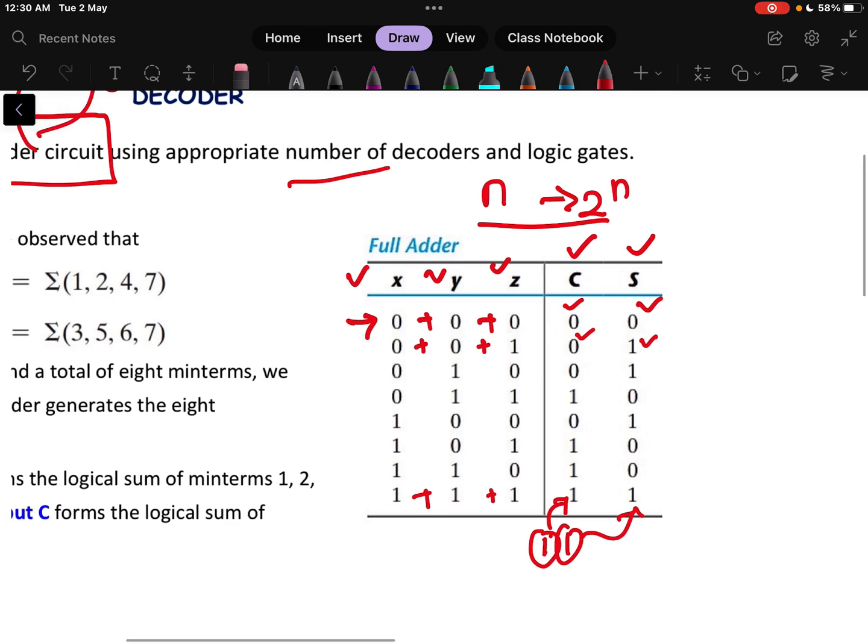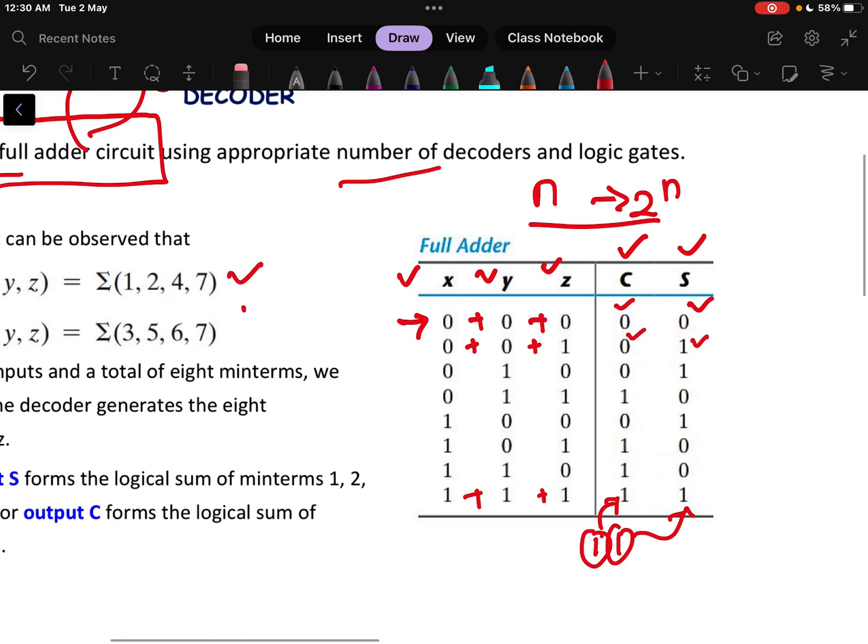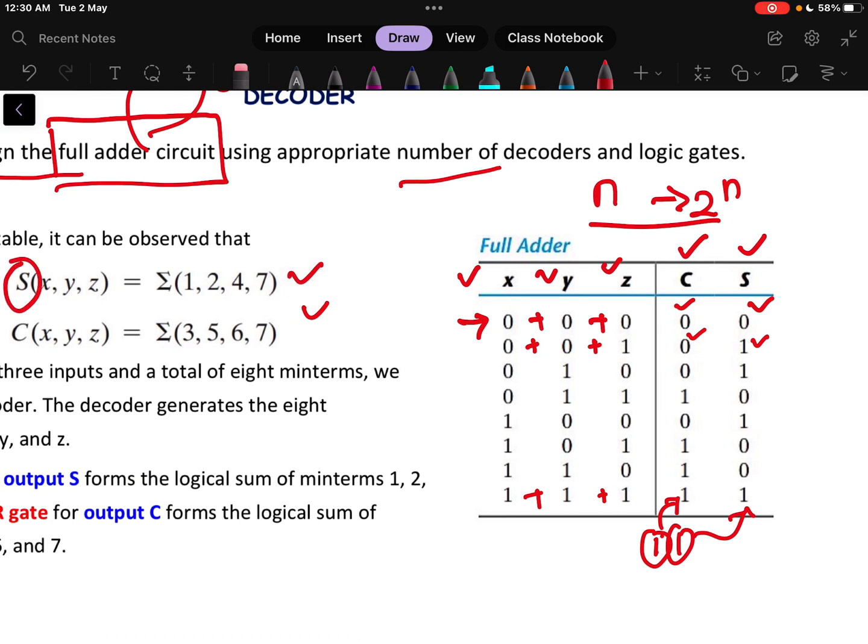Now from the truth table we can write that in the format of the canonical form of the SOP format. For sum, what is the expression? See, sum is 1 here. This is 1. This is sum is 1 here. This is 2. Sum is 1 here. This is 4 and this is 7. That means wherever the value of the sum equals to 1, we will consider that places and we will write the canonical form. Similarly, for carry also we will get this place is 3 and then this place will be your 5, 6 and 7. 3, 5, 6, 7 is written here.